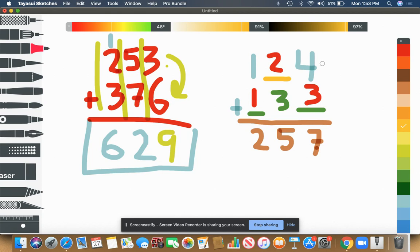Then if I go back to check it and add those together, 4 plus 3 is 7. Yep. 2 plus 3 is 5. Yeah. 1 plus 1 is 2. Good.